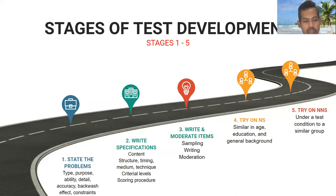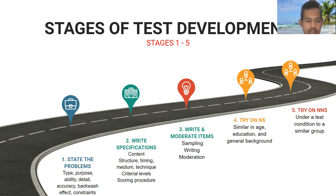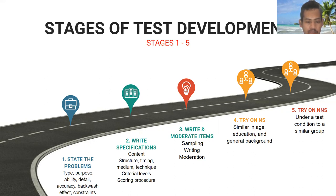After that, we move on to the next stage: writing specifications. This includes content and structure. When we talk about structure, we need to specify how many items are needed, how many alternatives for multiple choice questions, the timing, and also the medium or channel — whether it will be a paper test, a computer test, or an online test. We also need to specify the technique, the criteria levels, and the scoring procedures.